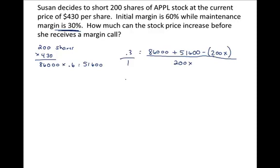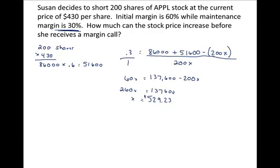Putting that side over 1 and cross multiplying gives us 60X equals 137,600 minus 200X. Adding 200X to both sides gives 260X equals 137,600. Solving for X, we get a price of $529.23 — meaning if the price rises to $529.23, that would trigger a margin call for Susan.